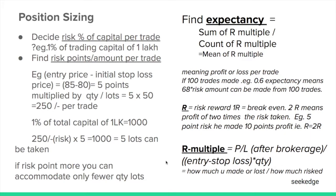The R-multiple is the PNL — the profit or loss amount — divided by the entry price minus the stop loss price, multiplied by the quantity. To get that profit or loss, how much risk did you take? That parameter is the R-multiple. The sum of all R-multiples — say for 100 trades — divided by the count, which is 100, gives the mean of the R-multiples. That mean is what expectancy is. It indicates the profit or loss per trade.